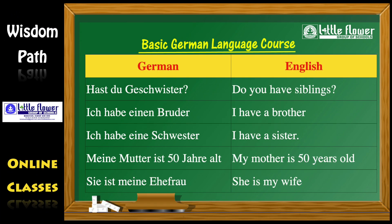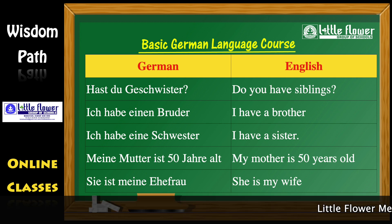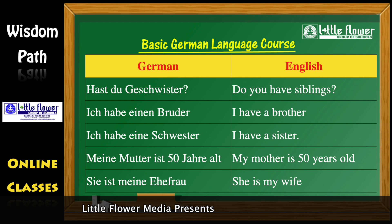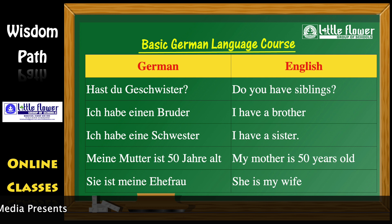Now let us see some examples. Hast du Geschwister? — Do you have siblings? Ich habe einen Bruder. — I have a brother. Ich habe eine Schwester. — I have a sister. Meine Mutter ist 50 Jahre alt. — My mother is 50 years old.